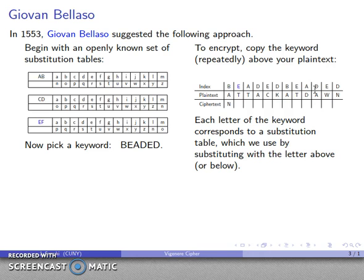Working through the encryption: Table B, letter A, goes to N. The next letter uses Table E — the plain text letter T is encrypted as E. The next letter uses index A — plaintext T is encrypted as G. Next, index D, letter A — Table D encrypts A as O. And so the remaining ciphertext letters are produced in this fashion.